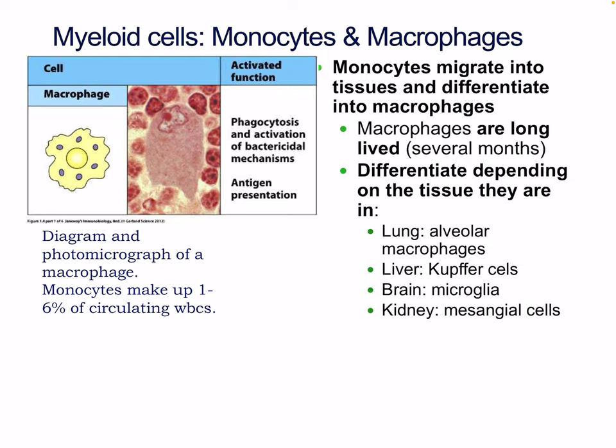Monocytes migrate into tissues and differentiate into macrophages. Macrophages are long-lived — they can live for several months in tissue once they migrate — and they differentiate depending on the tissue they're in. In the lung they become alveolar macrophages, in the liver they become Kupffer cells, in the brain they become microglia, and in the kidney they become mesangial cells.